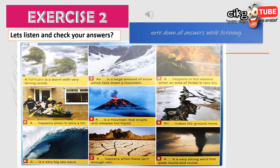A wildfire happens in hot weather when an area of forest is very dry. A flood happens when it rains a lot. A volcano is a mountain that erupts and releases hot liquid. An earthquake makes the ground move. A tsunami is a very big sea wave. A drought happens when there isn't enough rain.